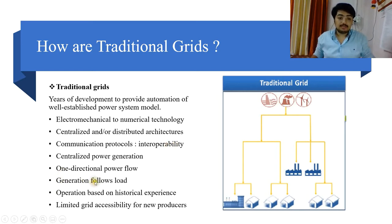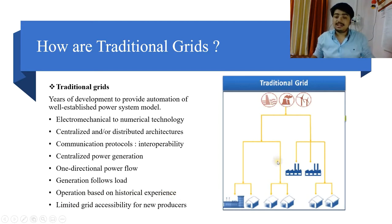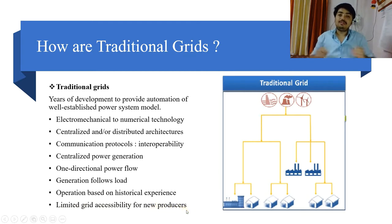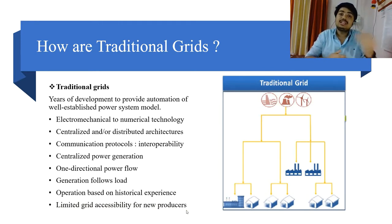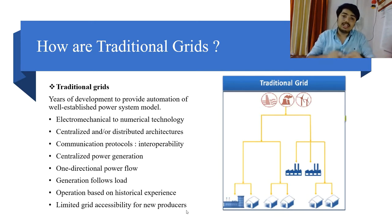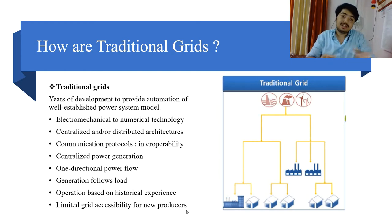The next characteristic is that operation is based on historical experiences, since this system doesn't have future prediction or processing power. Also, there is limited grid accessibility to new producers. As we know, we need to decrease our carbon footprint, so we are shifting towards renewable energy sources. Sometimes we generate extra renewable energy beyond our needs, and we may want to deliver that to the distribution system to earn credits. This is not possible in traditional grids — that's why we are shifting towards smart grids, and for that we need WAMS technology.